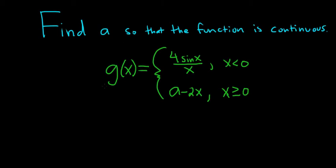Find 'a' so that the function is continuous. This is a piecewise function. The first piece is 4 sine x over x for x less than 0, which is continuous for x less than 0. The bottom piece, a minus 2x, is just a straight line and is certainly continuous for x greater than or equal to 0. So the only possible issue is a discontinuity at x equals 0 — we have to make the function continuous there.